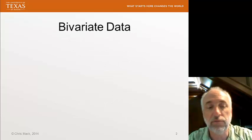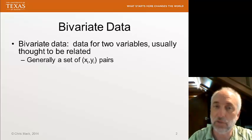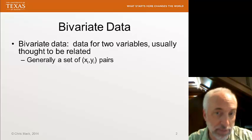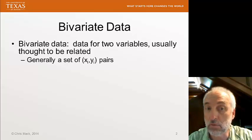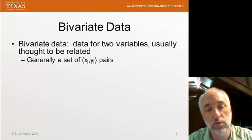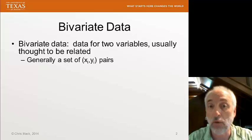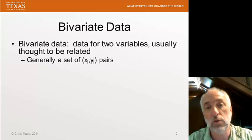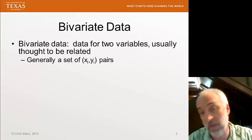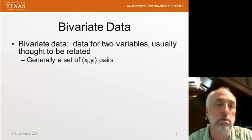To begin, let's define the term bivariate data. Bivariate is a fancy word for saying two variables. Data from two variables is bivariate data. They're generally thought to be related, that is, they're sets of pairs, X and Y. It could be the amount of money somebody earns as a function of how old they are. So the same person has these two attributes, the amount of money they earn and their age. Those kinds of things are considered bivariate data.